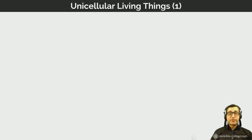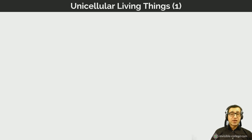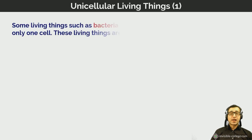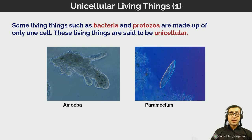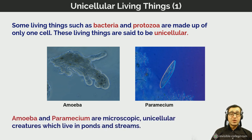Some living things, such as bacteria and protozoa, are unicellular — in other words, each living organism of those species is single-celled. Examples we've just seen include the amoeba and the paramecium — microscopic unicellular creatures which live in ponds and streams.